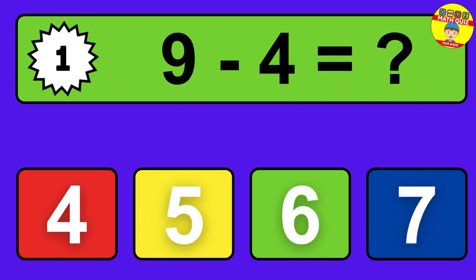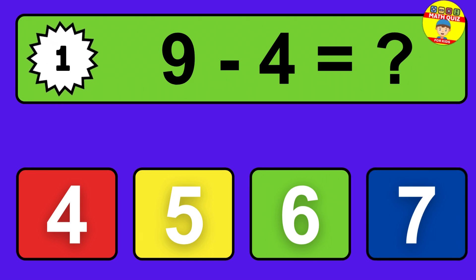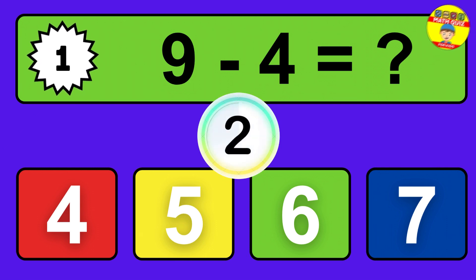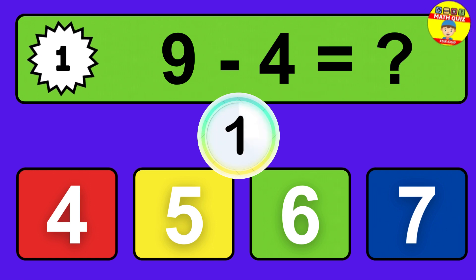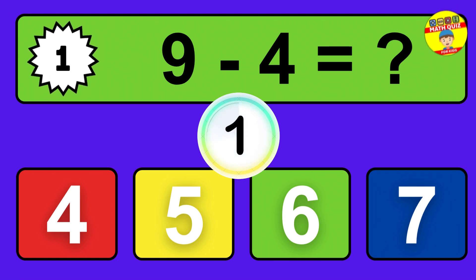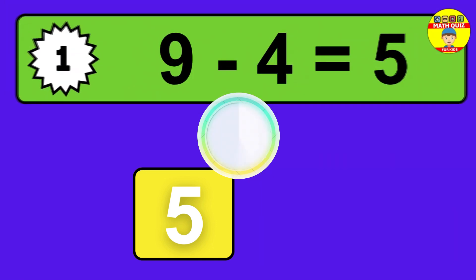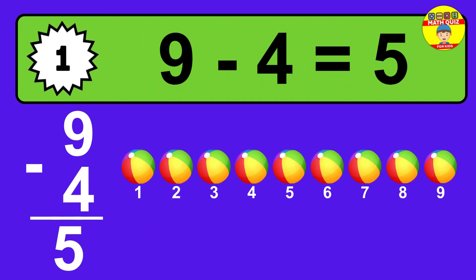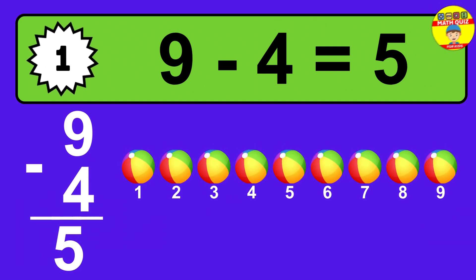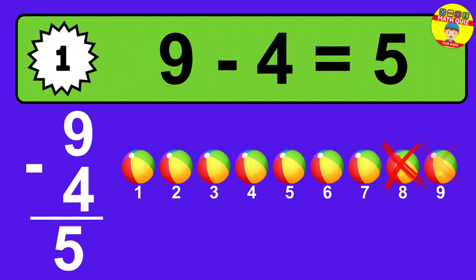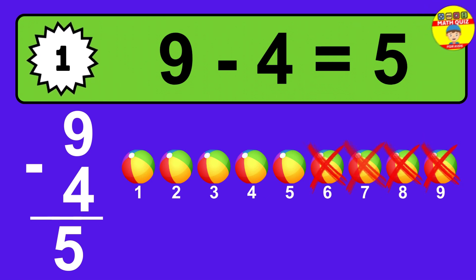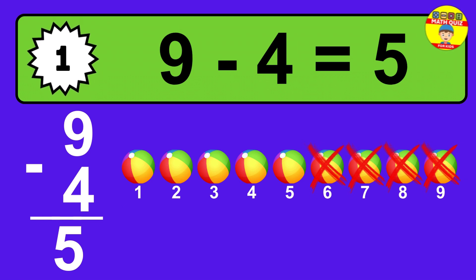Question one: nine minus four equals what? The answer is nine minus four is five. Let's count it. One, two, three, four, five.